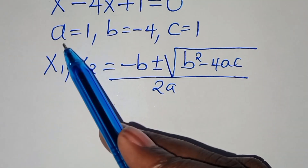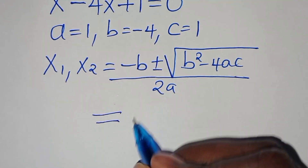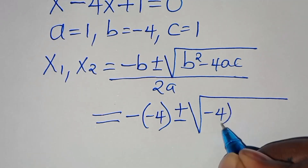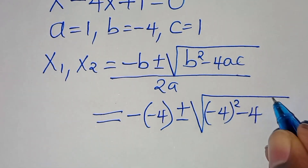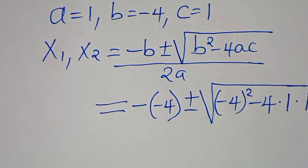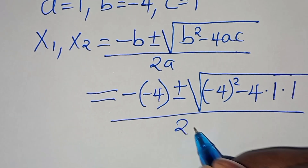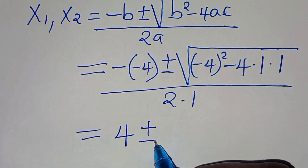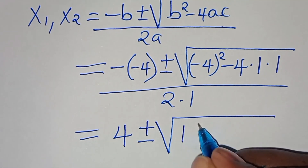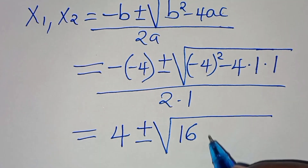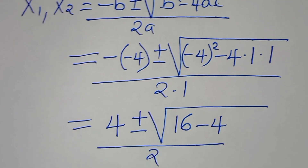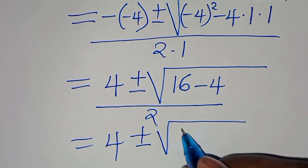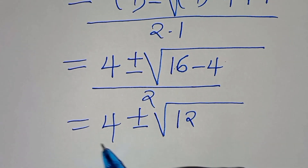Let's substitute a, b, and c into this formula, so that we have minus minus 4, plus or minus the square root of minus 4 squared, subtract 4 multiplying by a which is 1, then multiplying by c which is 1, everything divided by 2 times 1. So here we have 4 plus or minus the square root of 16 minus 4, which is 12, everything divided by 2.